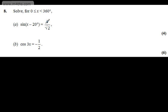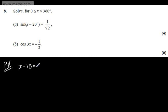If we take the inverse sine of 1 over root 2, we will get one of our known angles. The principal value for x minus 20 is going to be equal to the inverse sine of 1 over root 2, which gives us 45 degrees.